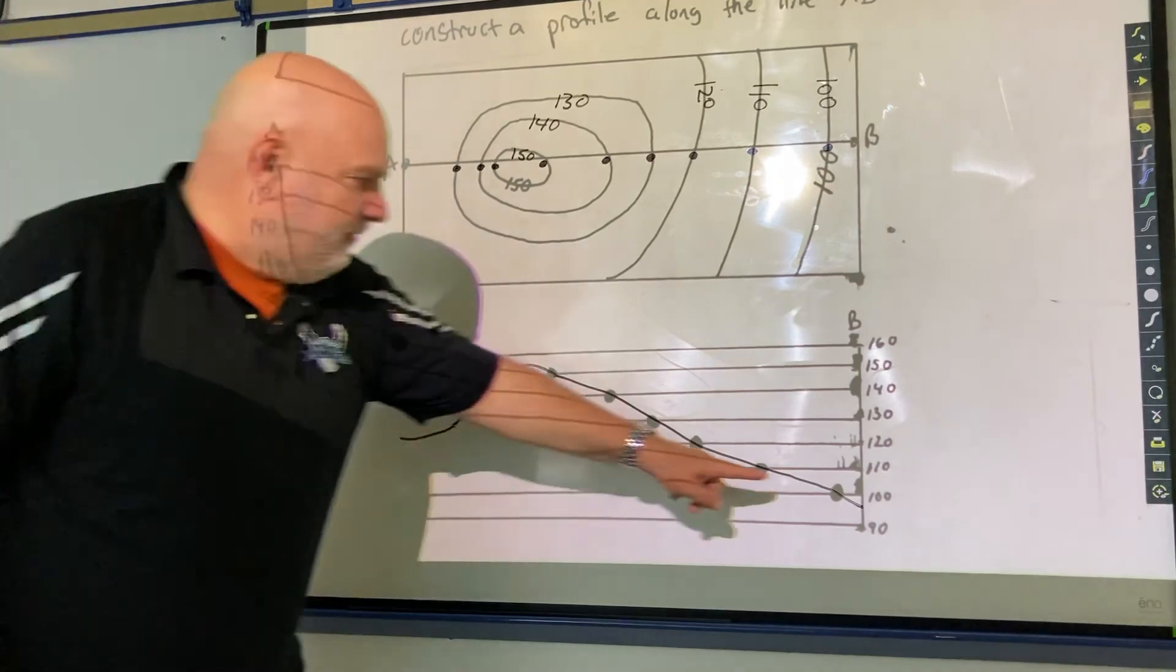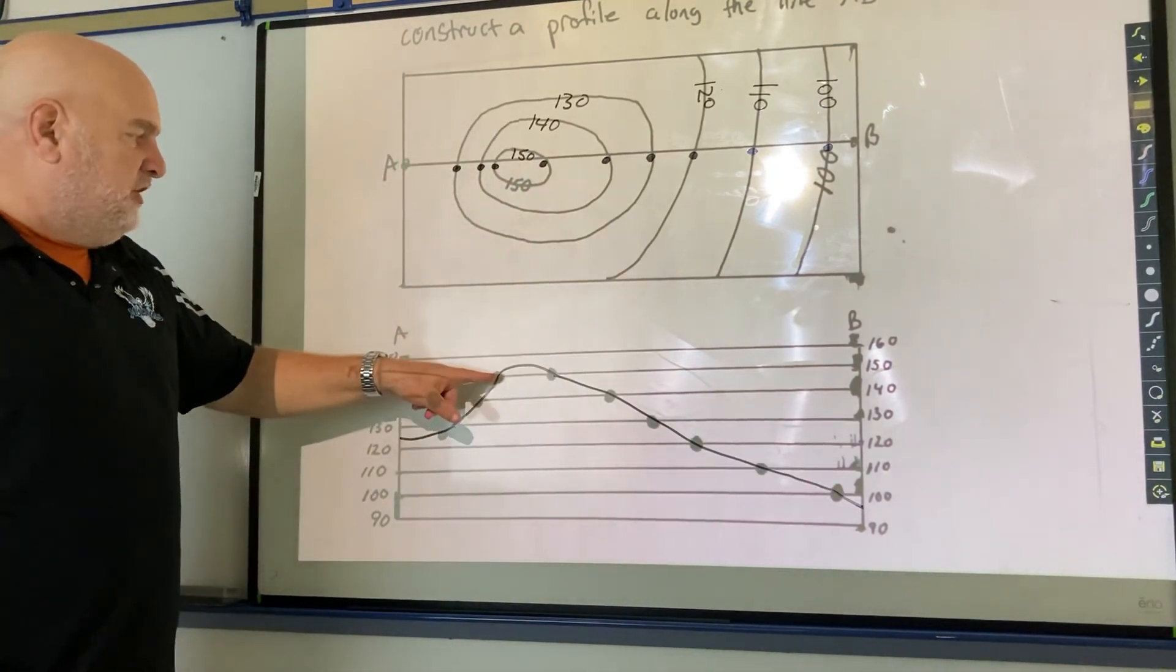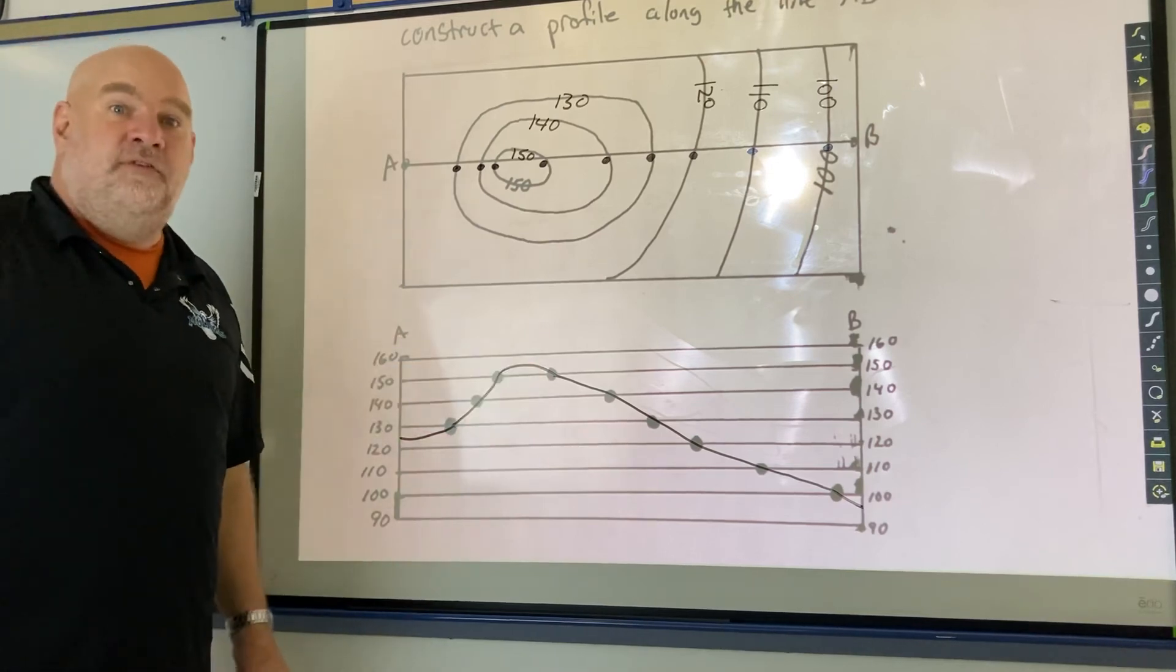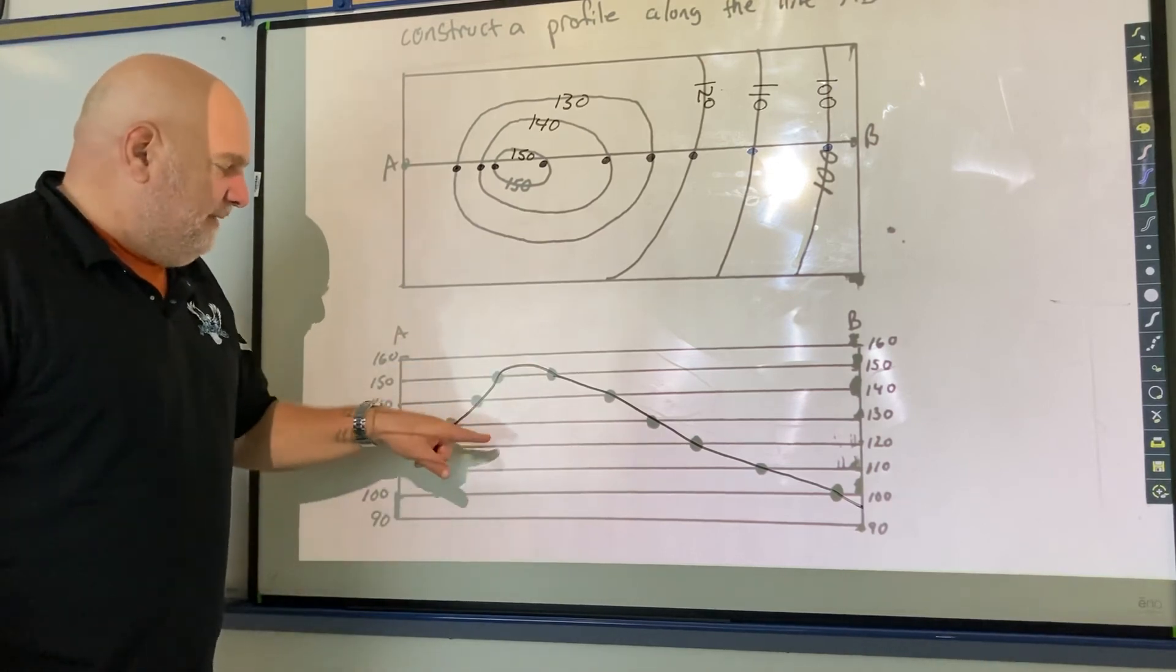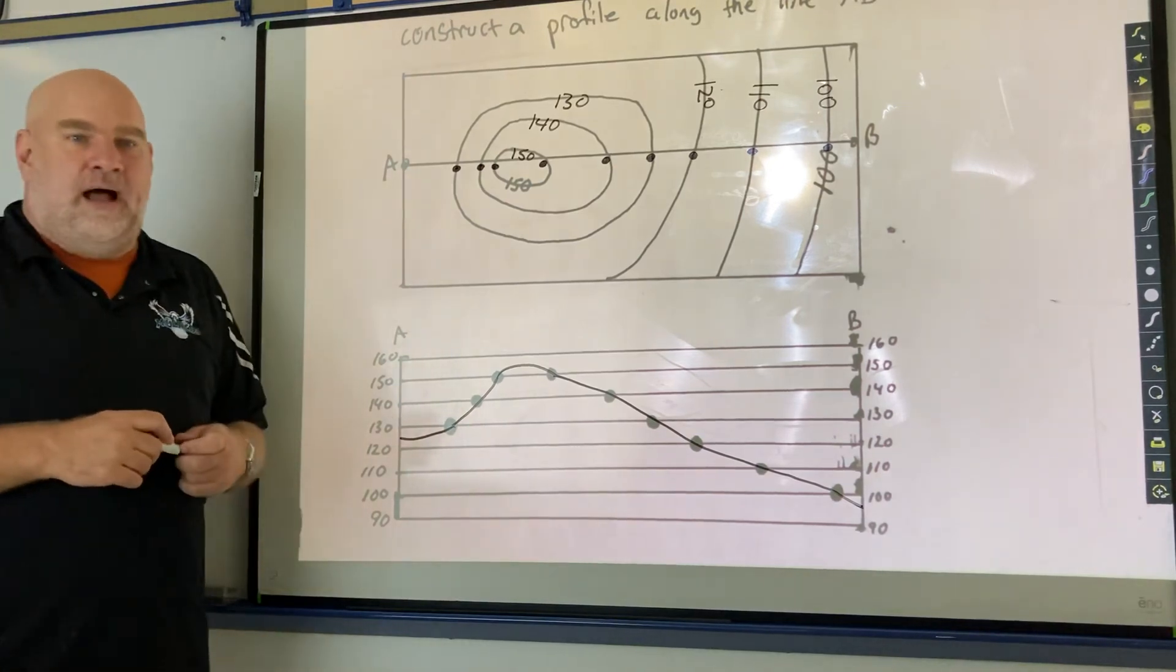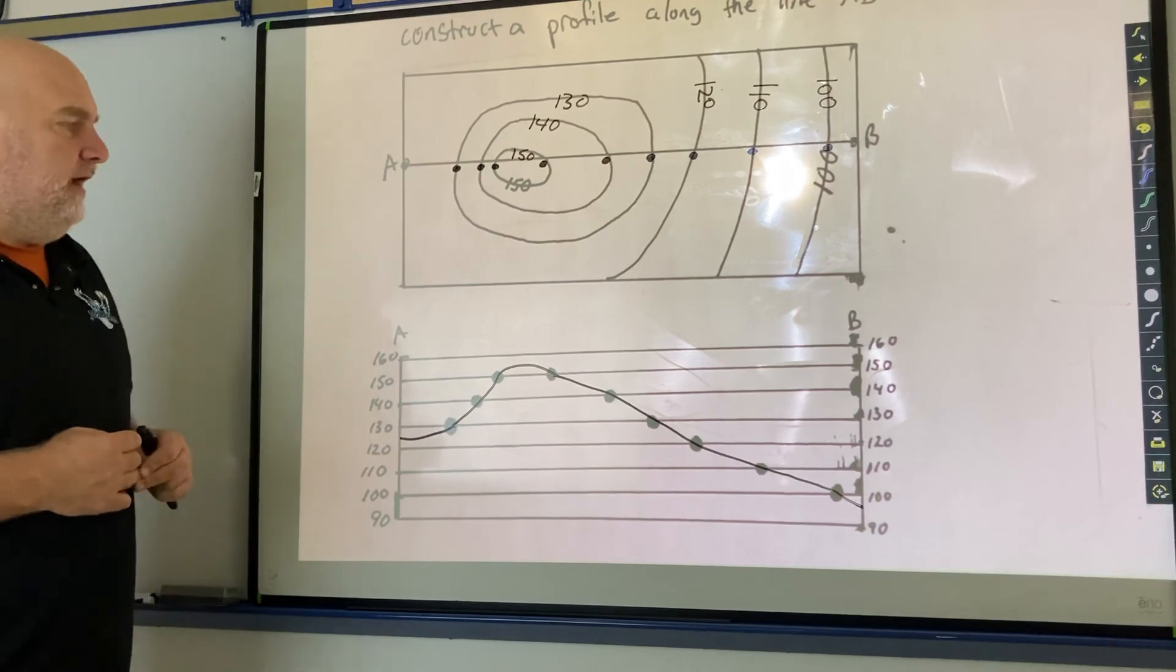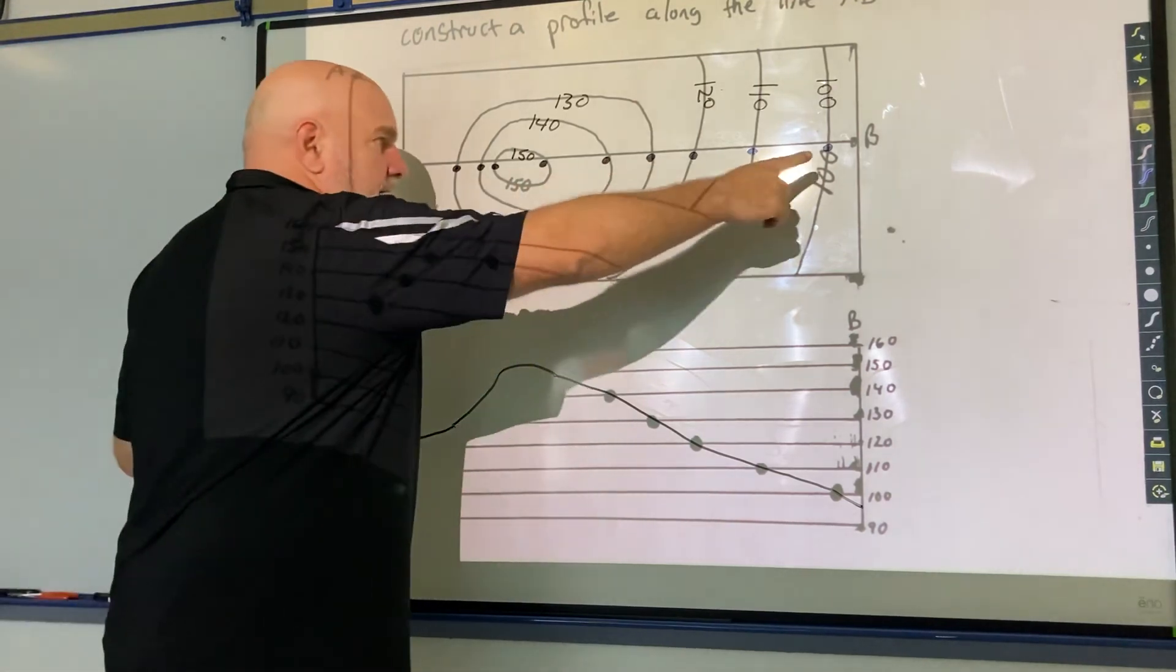All right, so you got to make sure your lines go off the sides of the map. And for hills, you don't just go straight across, you have to go up a little bit. If there was a valley instead of a hill, then you have to dip down a little bit. All right, so that is a profile, or that is a side view of what the land looks like along that line AB.